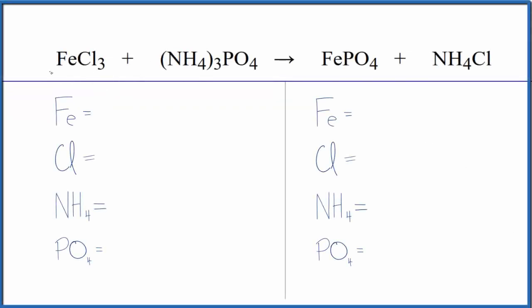In this video we'll balance the equation for iron three chloride plus ammonium phosphate. We'll use a trick to balance this equation that'll make it a lot easier. First let's count the atoms up and then balance the equation.